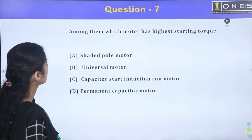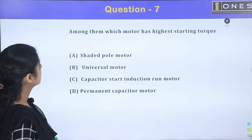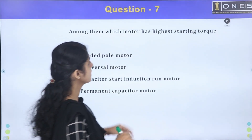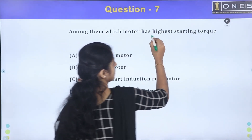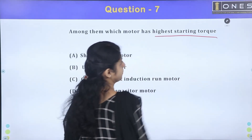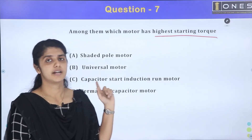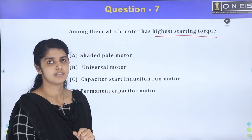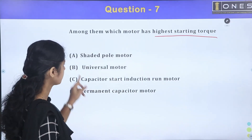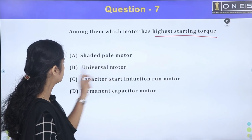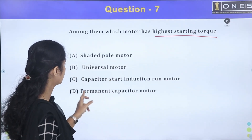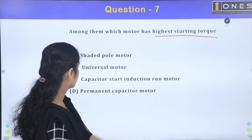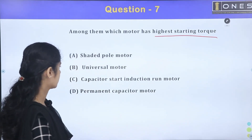The next question: among them, which motor has the highest starting torque? The options for highest starting torque are: shaded pole motor, universal motor, capacitor start induction run motor, and permanent capacitor motor.